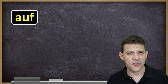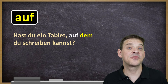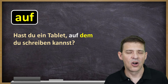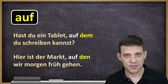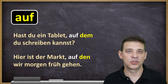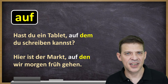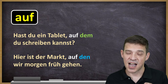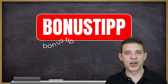Now, auf is also a preposition — but which case do we need to use with auf? Hast du ein Tablet, auf dem du schreiben kannst? Do you have a tablet on which you can write? Oder: Hier ist der Markt, auf den wir morgen früh gehen. Here is the market onto which we will go tomorrow morning early. As you can see, dem is dative and den is accusative — meaning auf can have two cases, accusative or dative. Which brings us to the bonus tip.